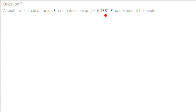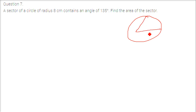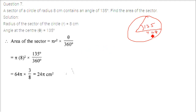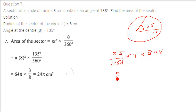A sector of a circle of radius 8 cm contains an angle of 135 degrees. Find the area of the sector. Using the formula directly: 135 by 360 into pi into 8 squared. Solving with r equal to 8 gives the area as 24 pi.